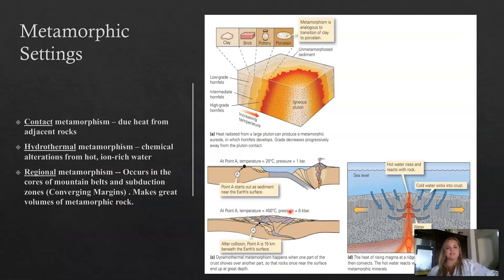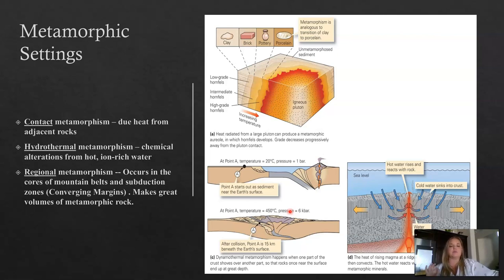Let's talk about metamorphic settings. There are three basic settings: contact metamorphism, hydrothermal, and regional. Contact and hydrothermal both yield non-foliated metamorphic rocks. Regional metamorphism is where we see our foliated metamorphic rocks. Here's a diagram to get you acquainted with each setting.